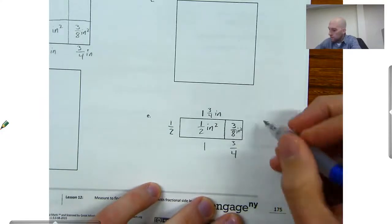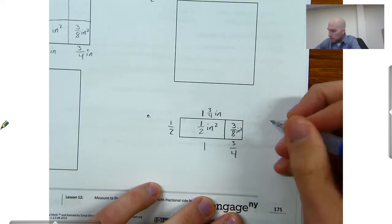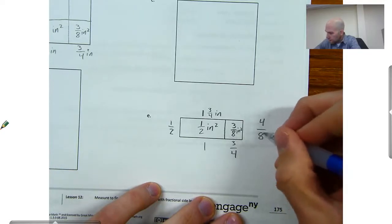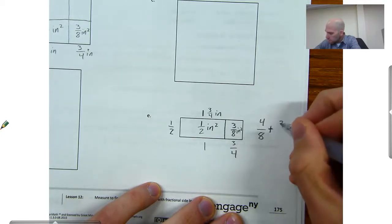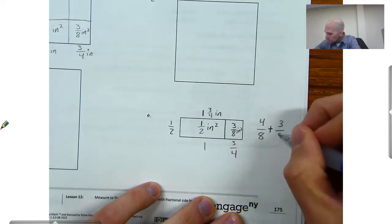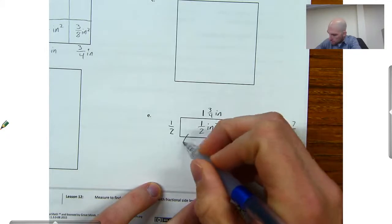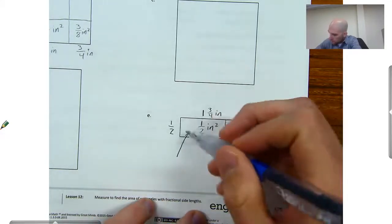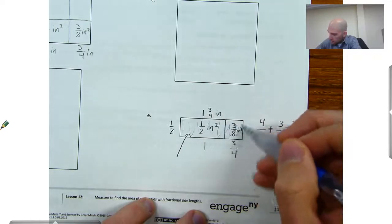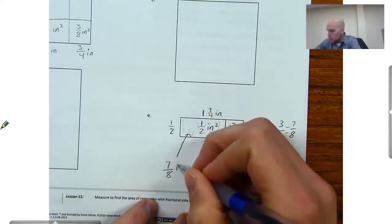Then I need to add those together. So I need to find a common denominator. I'll get 4 eighths — 1 half equals 4 eighths. I'm going to add my 3 eighths. It's going to give me 7 eighths. So my area in here, this whole thing is going to be 7 eighths square inches.